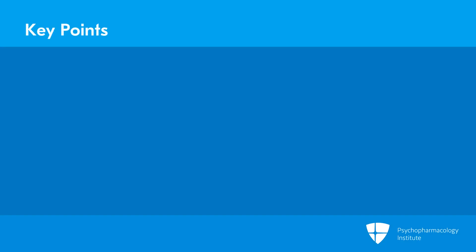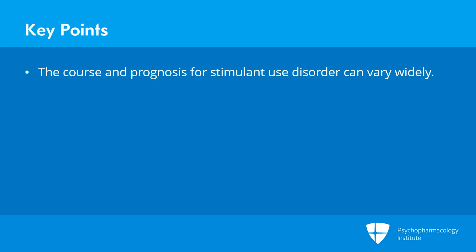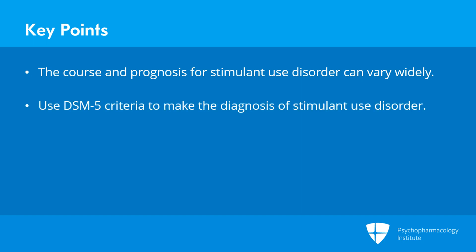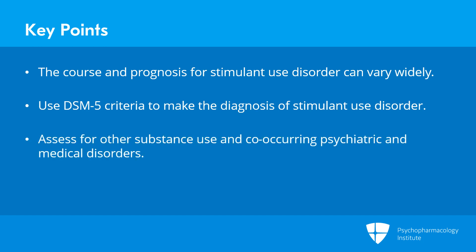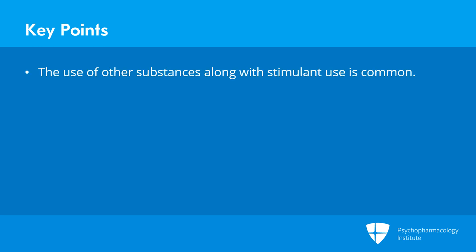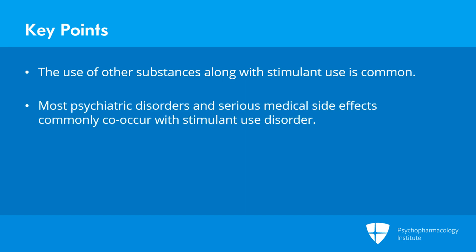To summarize: the course and prognosis for stimulant disorder can vary widely. Use the DSM-5 criteria to make the diagnosis, and when possible assess for other substance use and co-occurring psychiatric and medical disorders. Use of many other substances along with stimulants is common, most psychiatric disorders — especially ADHD — and very serious medical side effects are very common in people with stimulant use disorder.